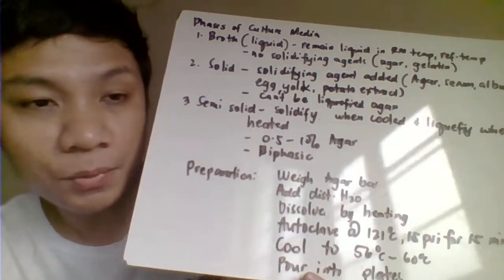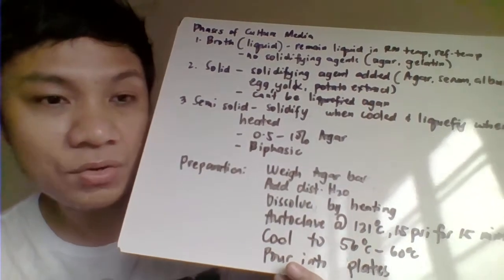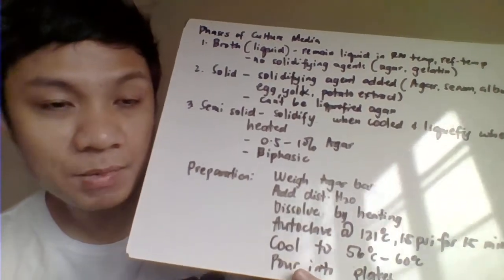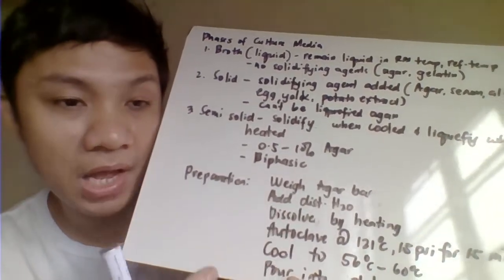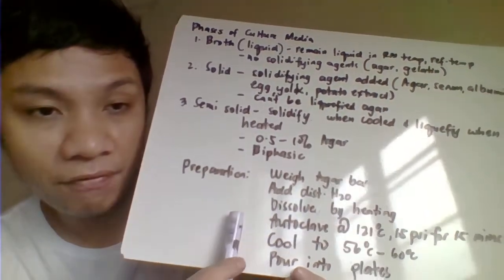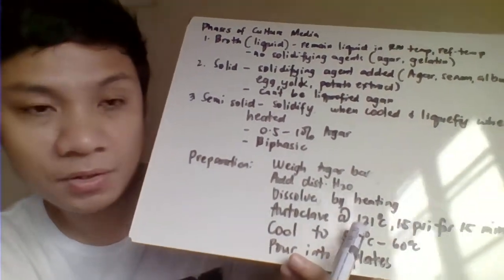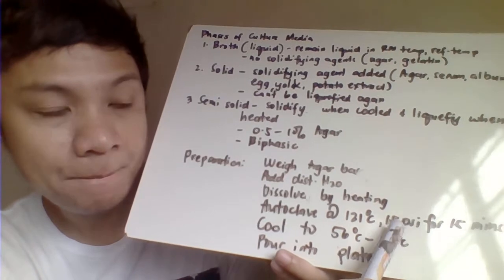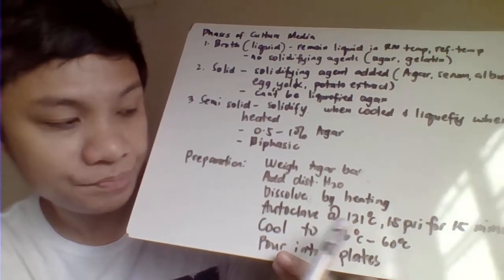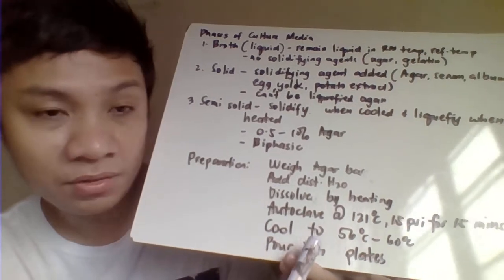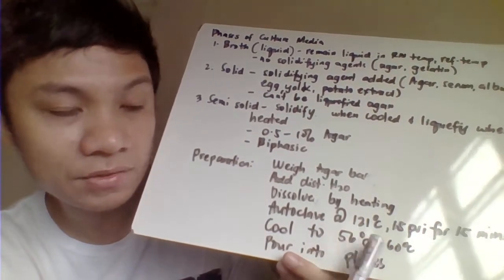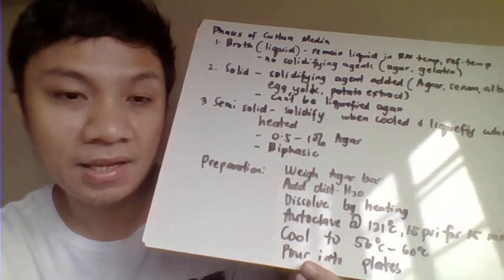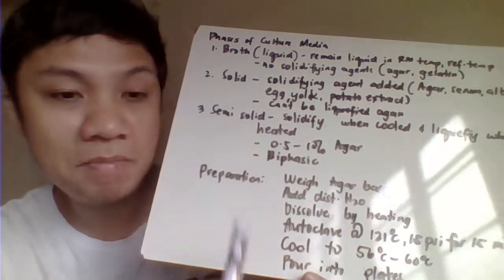After weighing the agar base, dissolve it in distilled water in an Erlenmeyer flask by heating. Once all agar is dissolved, cover with foil and autoclave at 121 degrees Celsius, 15 psi, for 15 minutes. After autoclaving, cool the sterilized agar to 56–60 degrees Celsius, then pour into plates and allow to solidify to produce your agar plate.